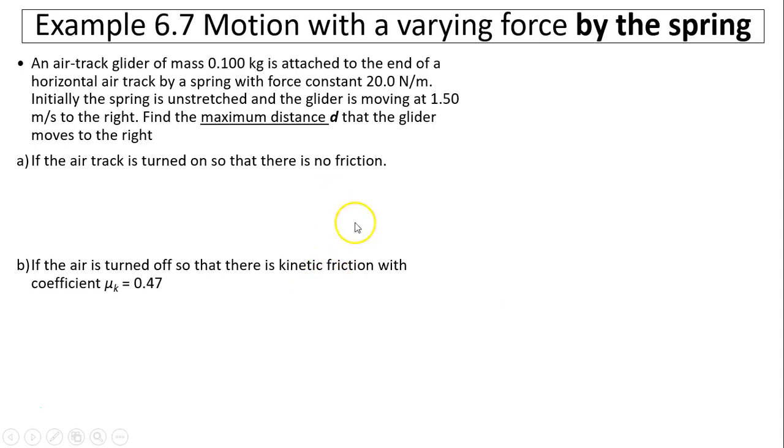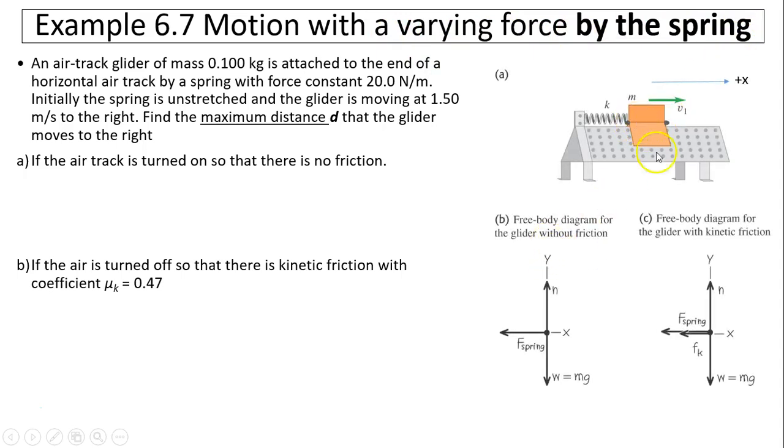Let's take a look at this example. Motion with varying force, the work done by the spring. A glider of mass 0.1 kilograms is attached to the end of a horizontal air track by a spring with force constant 20 newtons per meter. Initially, the spring is unstretched and the glider is moving at 1.5 meters per second to the right. Find maximum distance d. The glider moves to the right. The first case is when there is no friction, the second case is when there is friction. First, you draw a situation. You decide which side is positive. I decide to the right is positive.